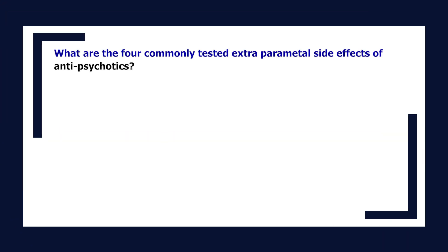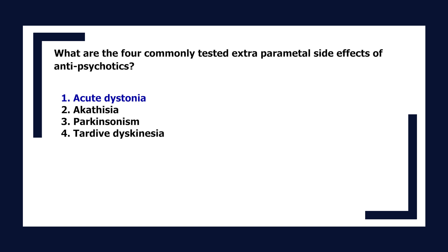What are the four commonly tested extrapyramidal side effects of antipsychotics? 1. Acute dystonia. 2. Akathisia. 3. Parkinsonism. And 4. Tardive dyskinesia.